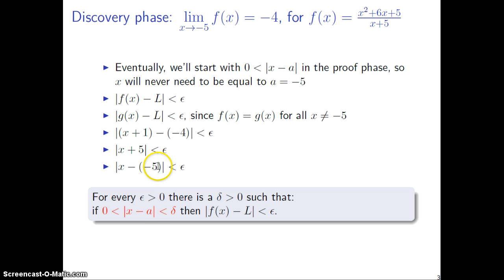And therefore, a would have to be negative 5. That, I guess, we knew already. And then what?